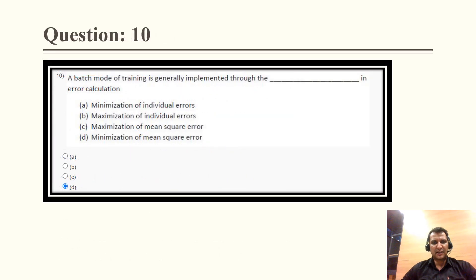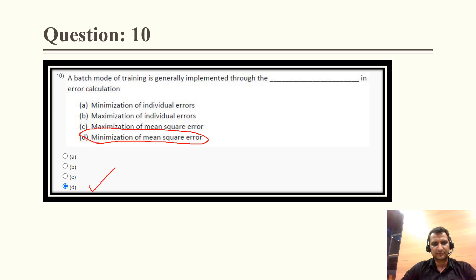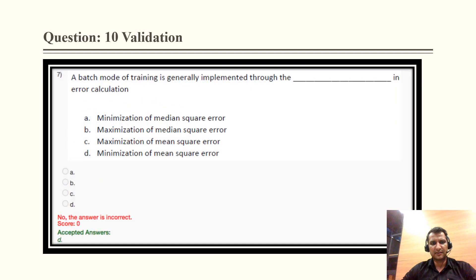Question 10: a batch mode of training is generally implemented through minimizing the mean square error. The correct answer is option D. This question has also been asked in a previous year question paper.